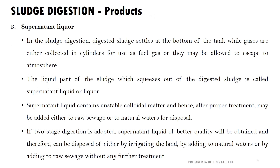The third product is supernatant liquid. We collect the gases above the tank, and the supernatant liquid is separated from the sludge. This is how we manage the unstable solids. After this, we add proper treatment and return it to natural water disposal. We have two stages of digestion.